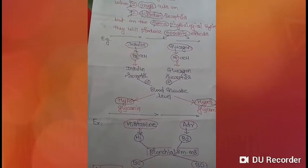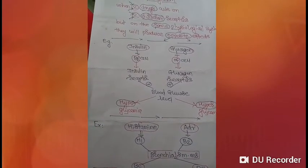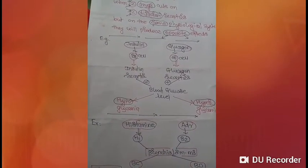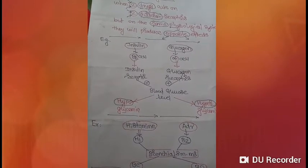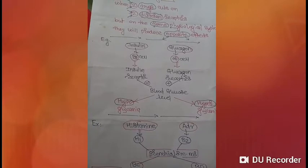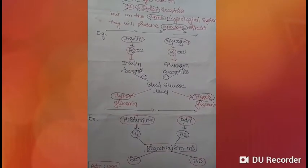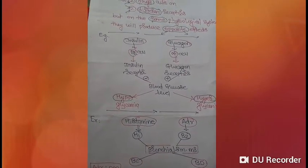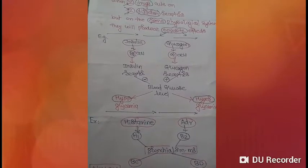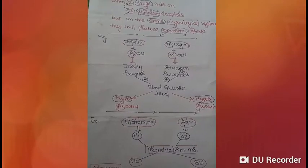Histamine acts on histaminergic receptors like H1; adrenaline acts on adrenergic receptors like beta-2. Both act on the same physiological system: bronchial smooth muscles. Histamine acting on bronchial smooth muscle causes bronchoconstriction, while adrenaline acting on beta-2 receptors in the bronchial muscle causes bronchodilation — opposite effects on the same system.